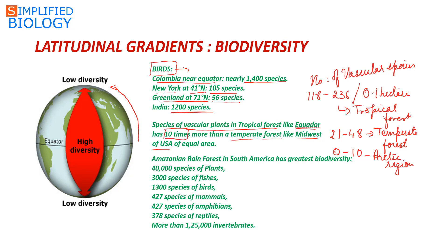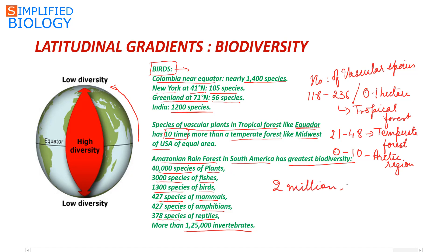The Amazonian rainforest in South America has the greatest biodiversity. It has about 40,000 species of plants, 3,000 species of fishes, 1,300 species of birds, 427 species of mammals, 427 species of amphibians, 378 species of reptiles, and more than 1,25,000 vertebrates. Scientists estimate that at least 2,000,000 species of insects in this region are yet to be discovered.